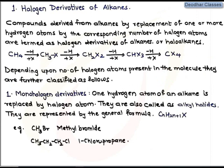Now we will focus on halogen derivatives of alkanes. As the name suggests, halogen derivatives of alkanes are obtained from alkanes by replacing one or more hydrogen atoms with a corresponding number of halogen atoms. They are called halogen derivatives of alkanes or haloalkanes.